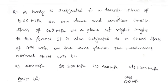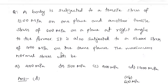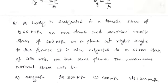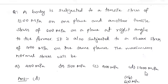Next question: a body is subjected to a tensile stress of 1200 MPa on one plane and another tensile stress of 600 MPa on a plane at right angles to the former. It is also subjected to a shear stress of 400 MPa on the same planes. The maximum normal stress will be: option A 400 MPa, option B 500 MPa, option C 900 MPa, option D 1400 MPa. The answer is option D, 1400 MPa.